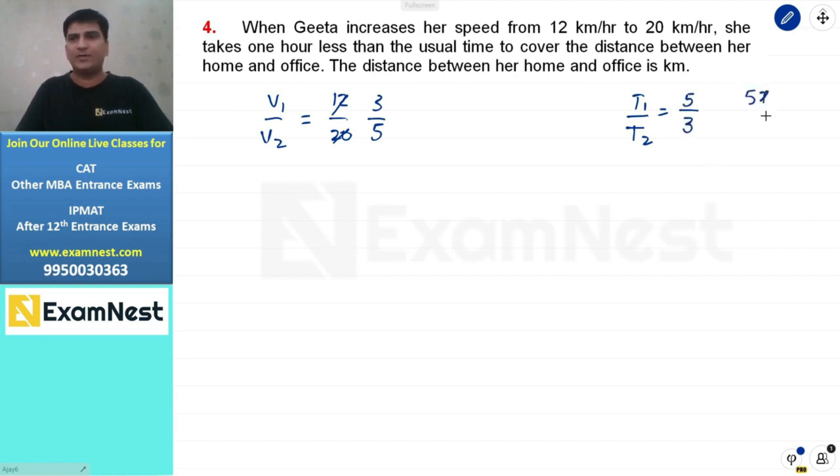If I take this as 5x and 3x, then the difference is 2x. How much difference is given? 1 hour less. So 2x is equal to 60 minutes.